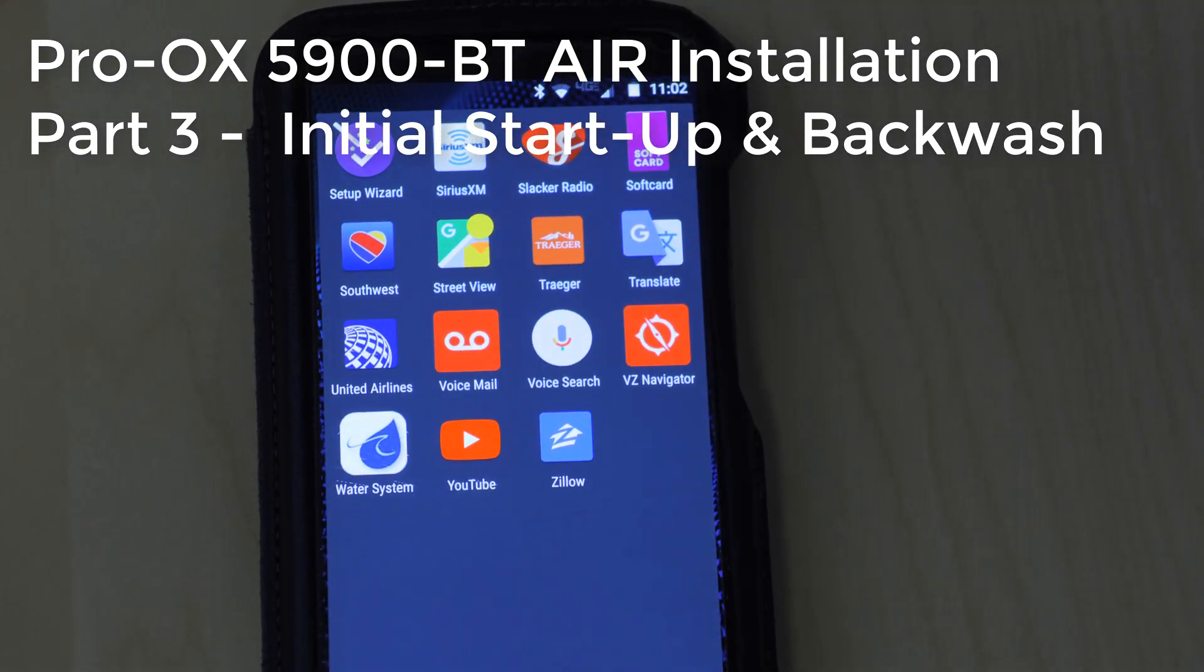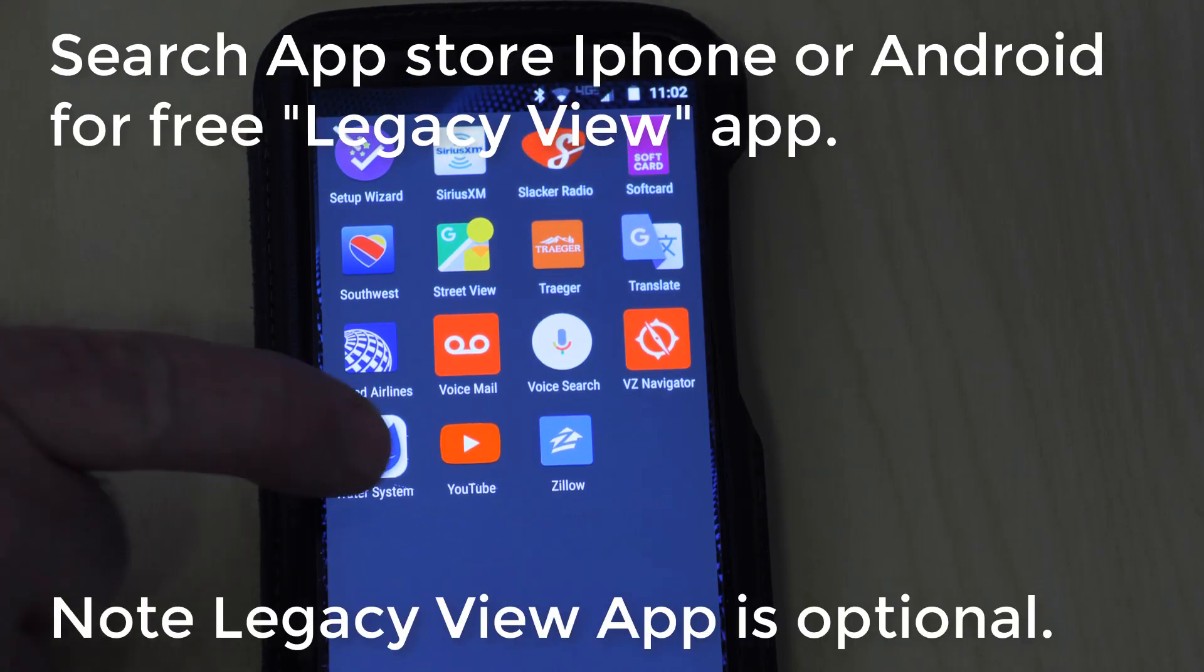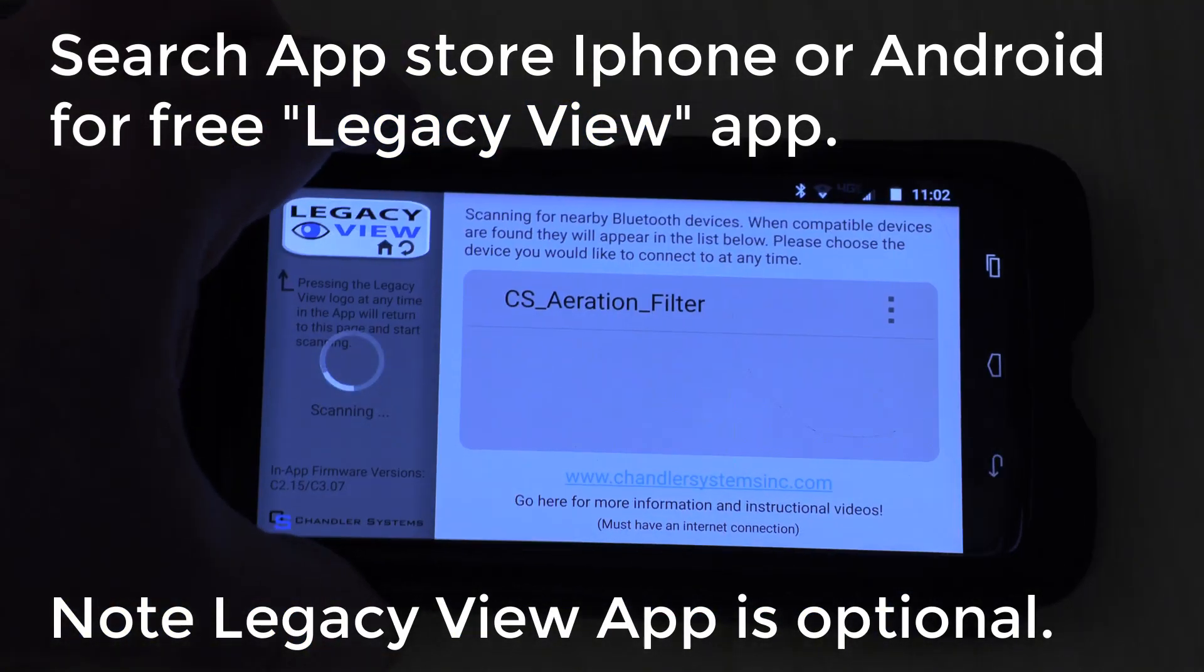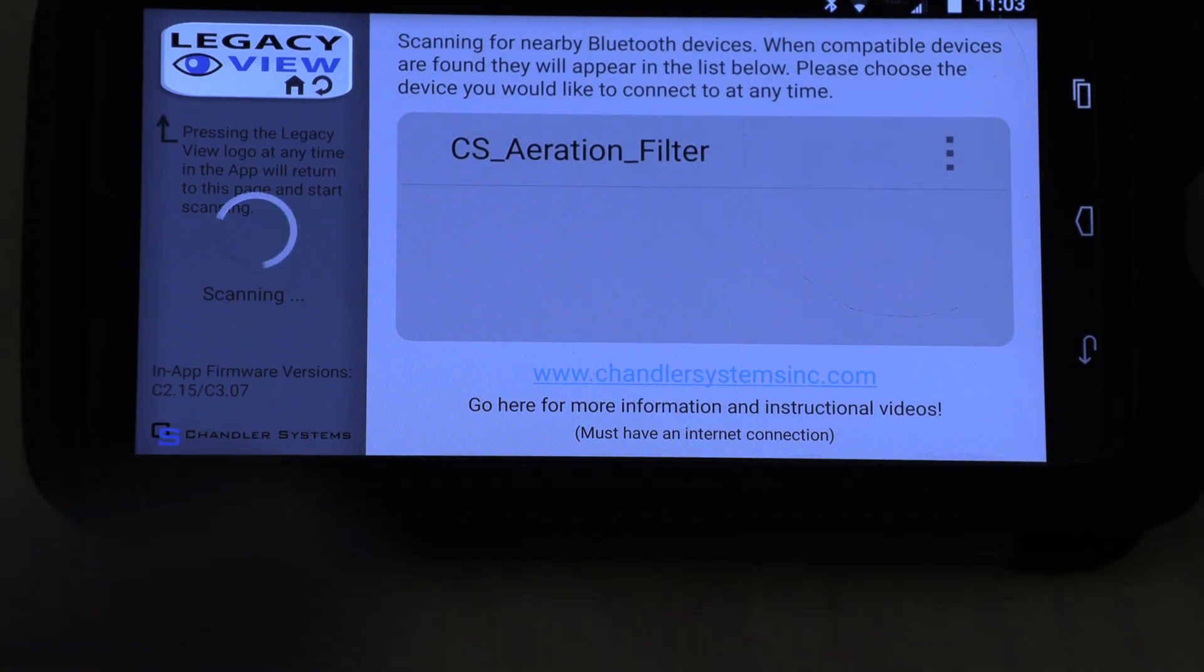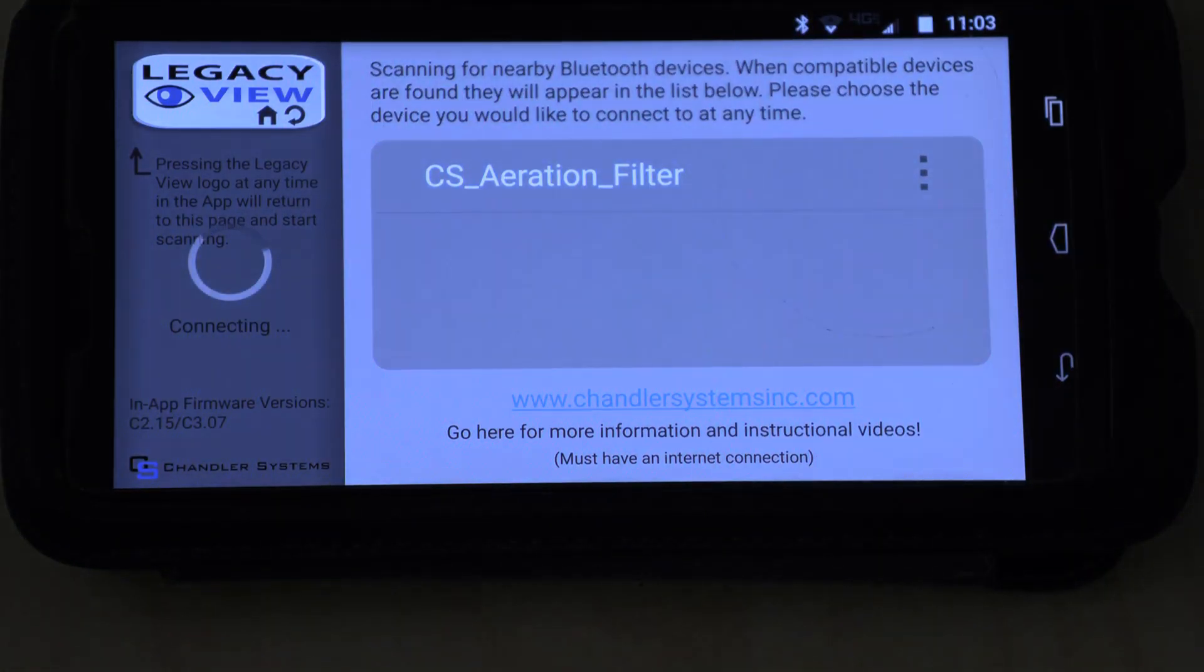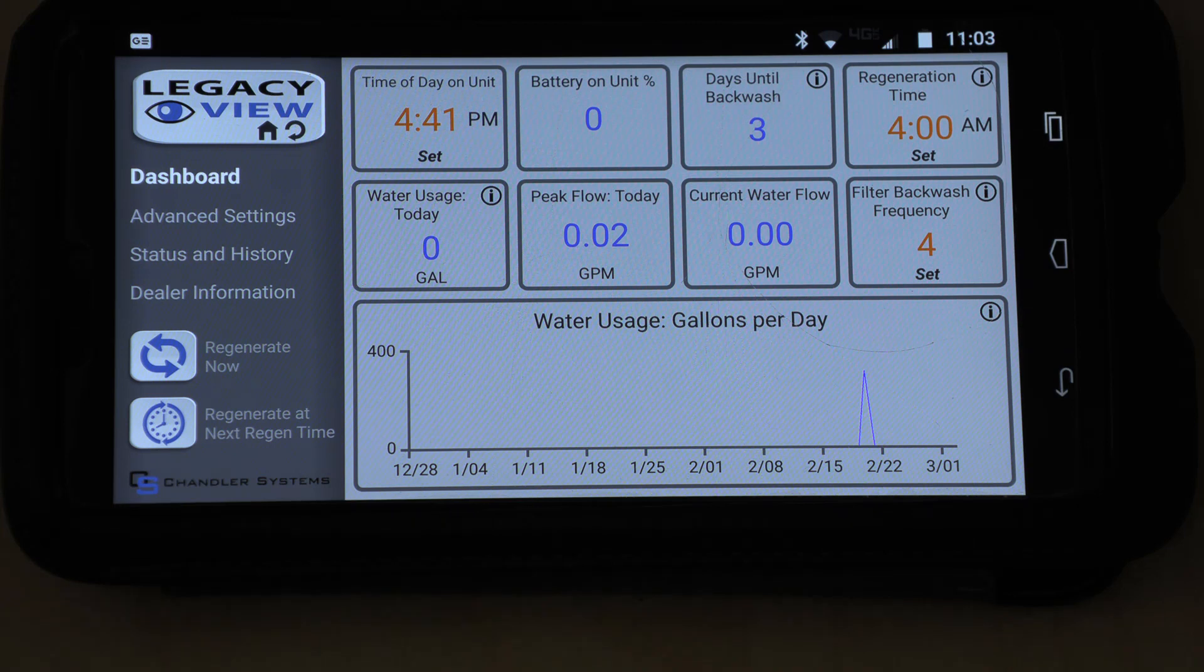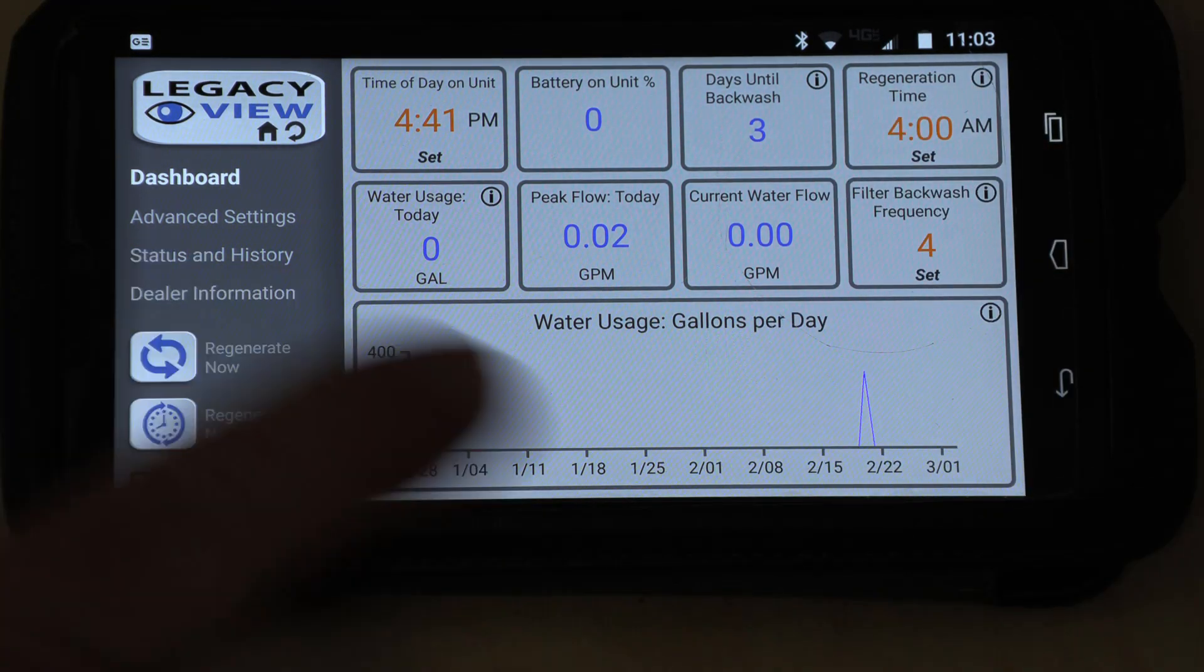Okay, so you can actually download the Legacy app for your water system. Go ahead and open that app. As you can see here, it's showing an aeration filter which is connected through Bluetooth. That's the valve we actually have, and there's your dashboard.